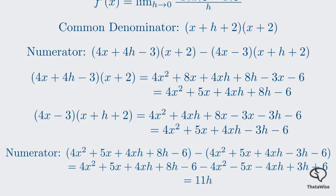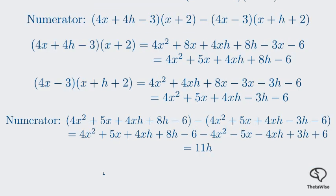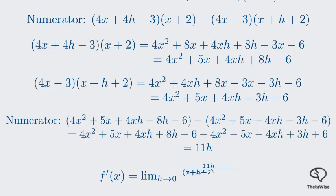We are left with 8h minus negative 3h, which simplifies to 11h. So our numerator has simplified to 11h. Let's put this back into our original limit. The expression becomes the limit as h approaches 0 of 11h, all divided by the product of x plus h plus 2, and x plus 2, and then this entire fraction is divided by h.